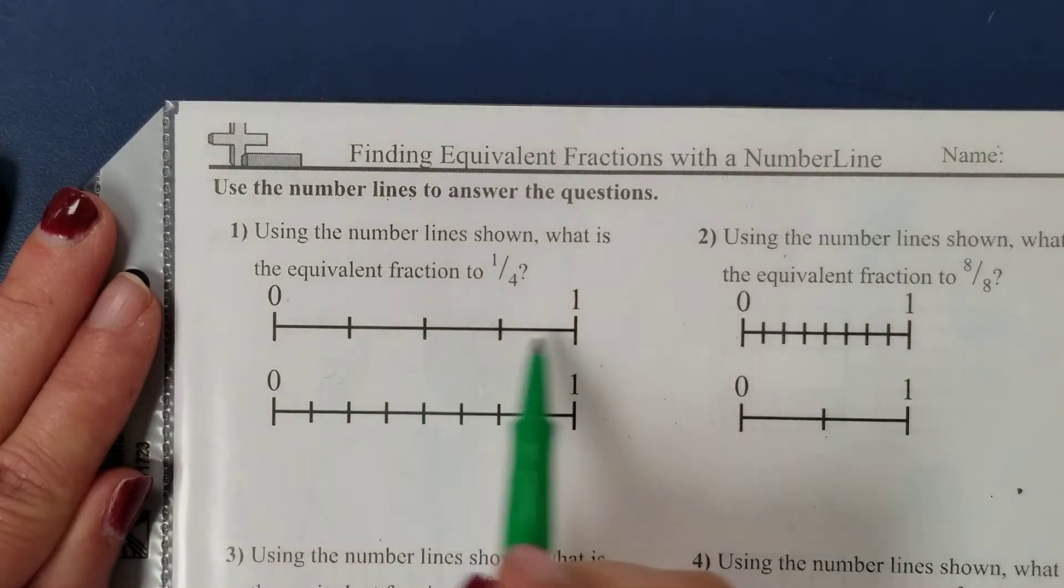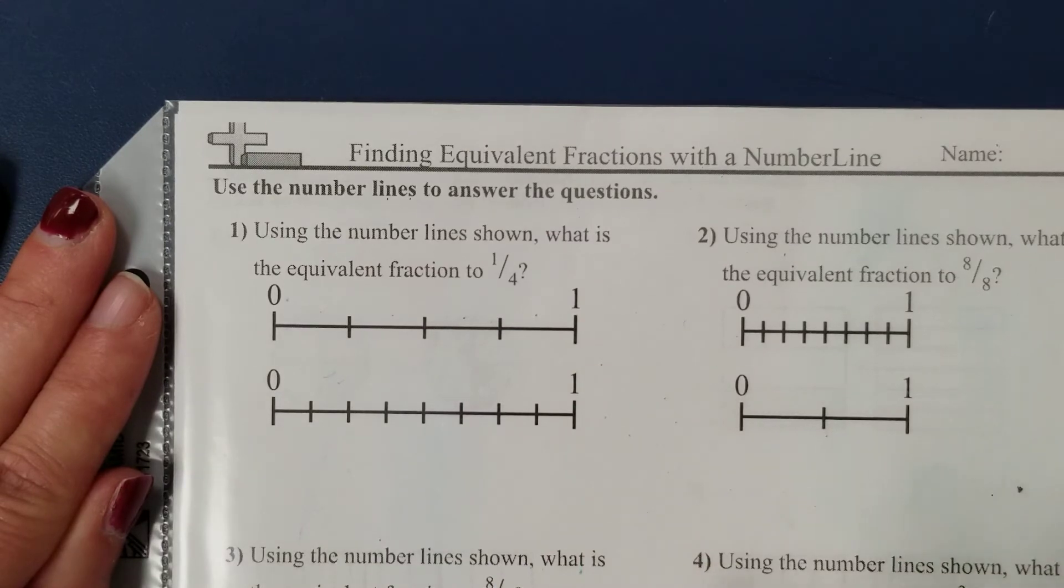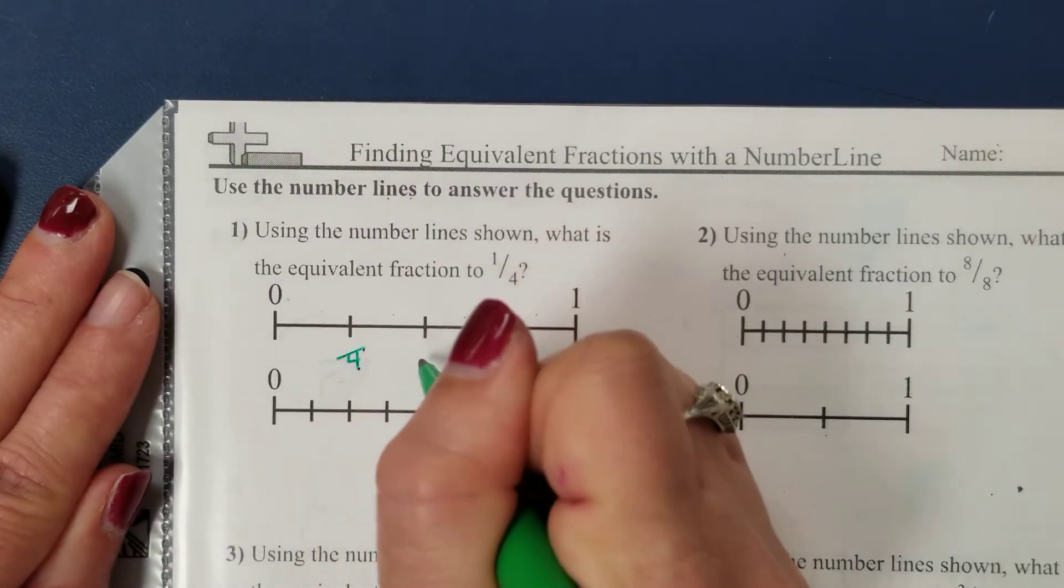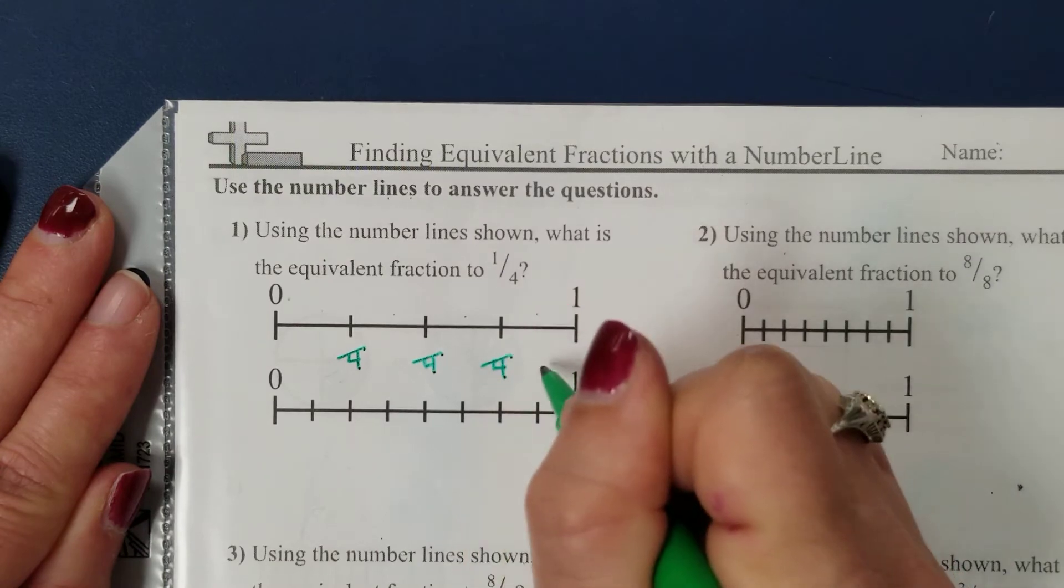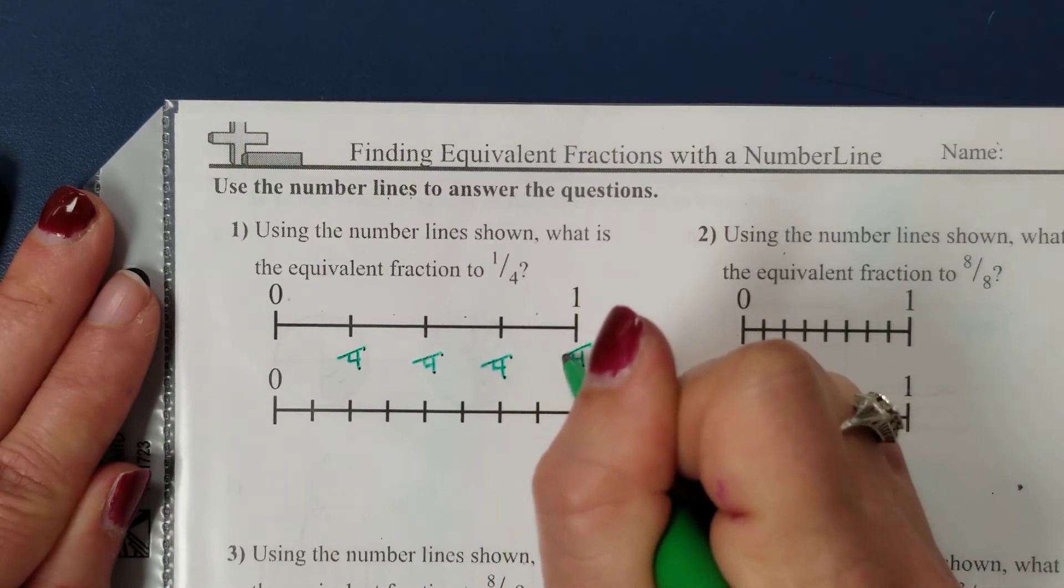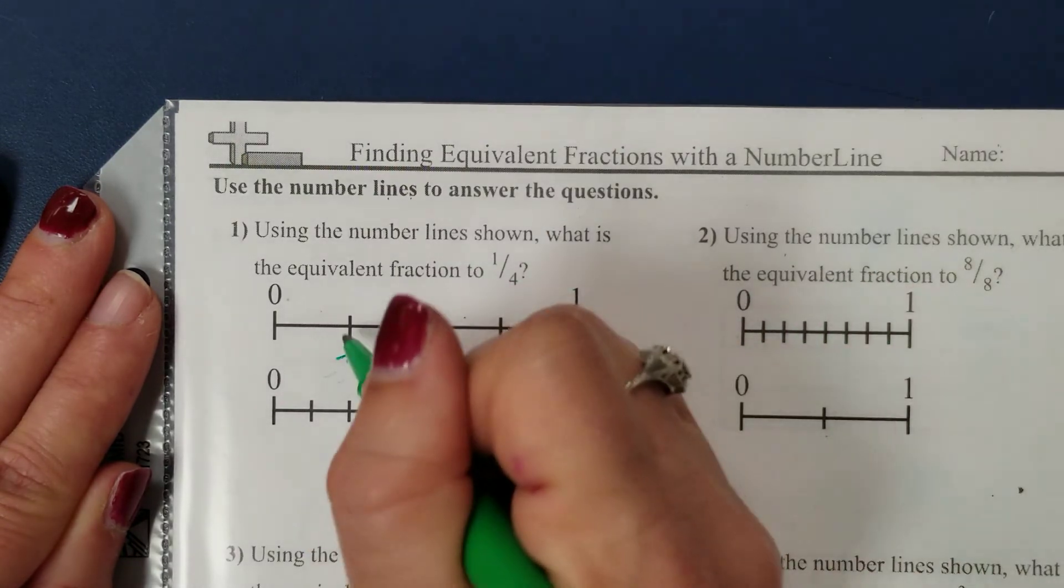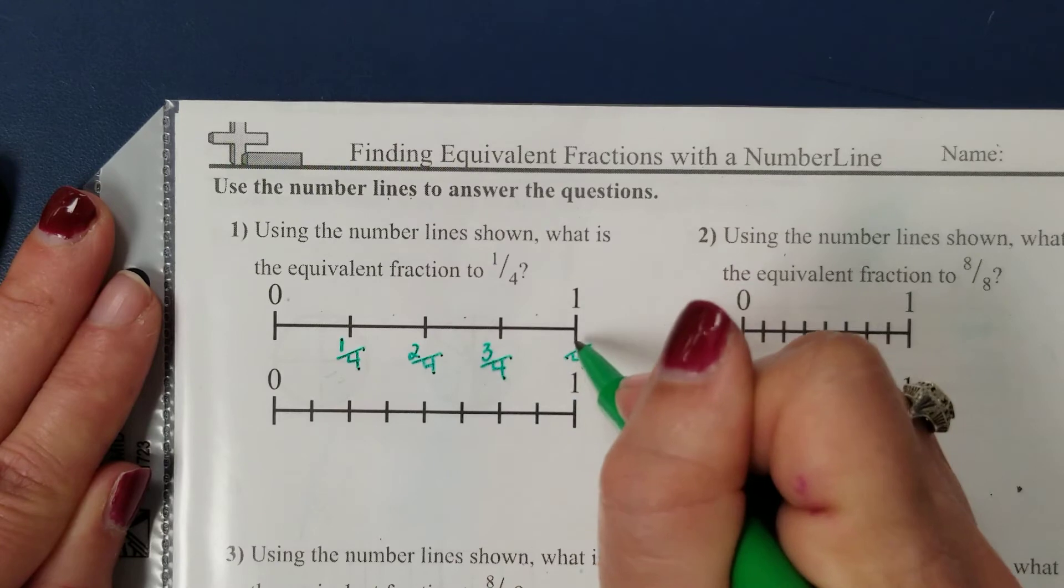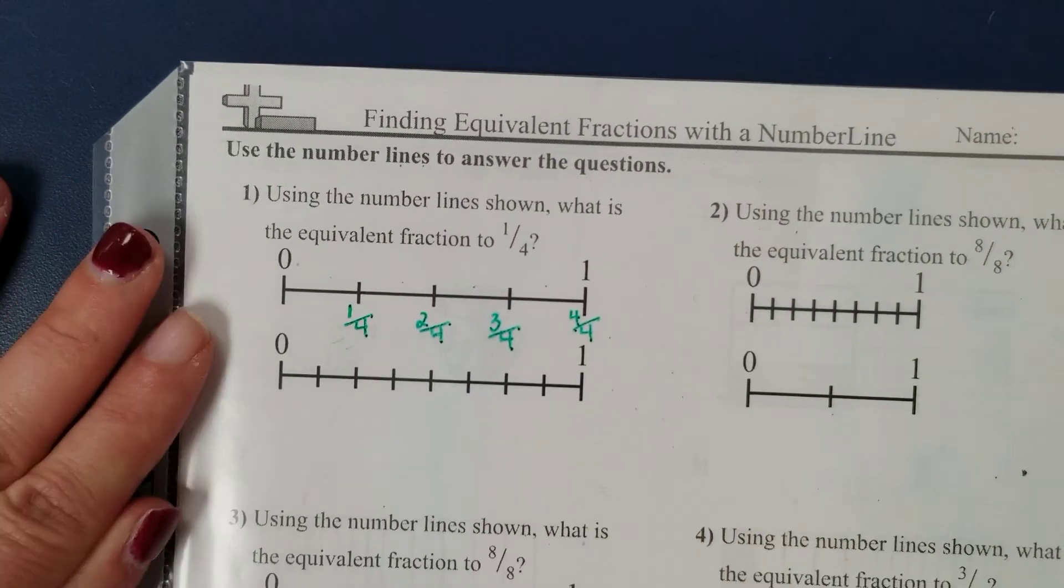So if I look at this first number line, we have one, two, three, four equal parts that it is divided into. So my fractions on this number line are always going to have a four in the denominator. And the numerator we are just going to be counting along the line. So we have one-fourth, two-fourths, three-fourths, and squeezing it in, four-fourths is equal to one.